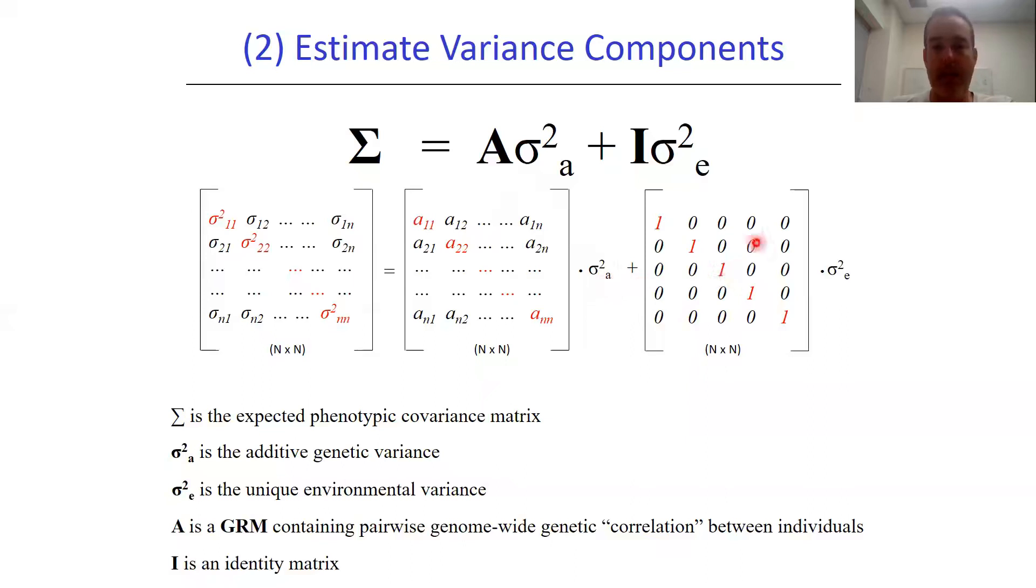Likewise, for the residual part of the model, we are adding a residual variance down the diagonal and then combining them both to get this expected phenotypic variance covariance matrix.